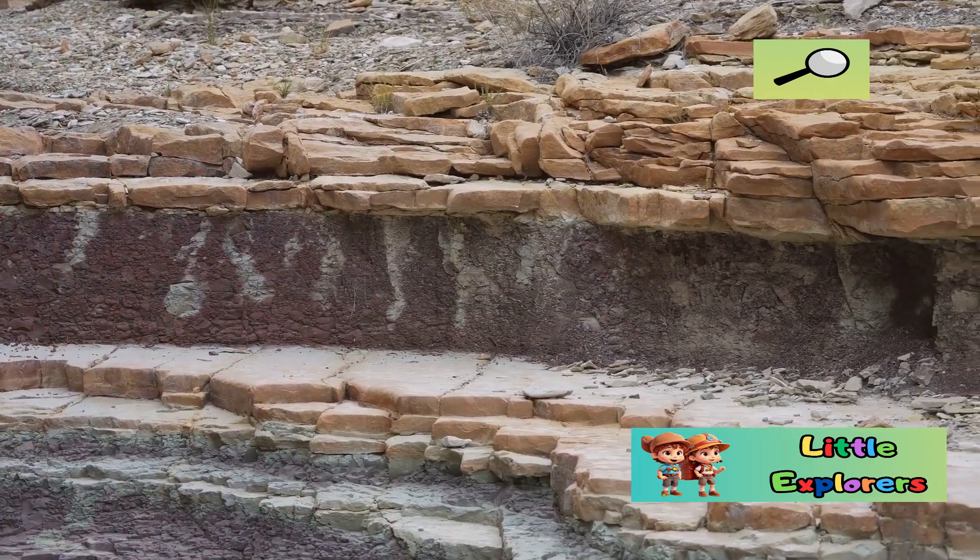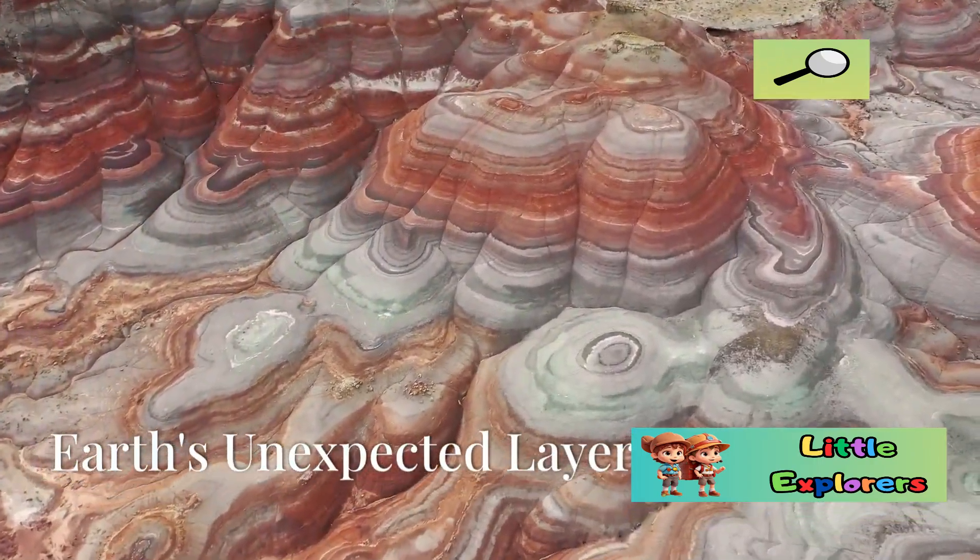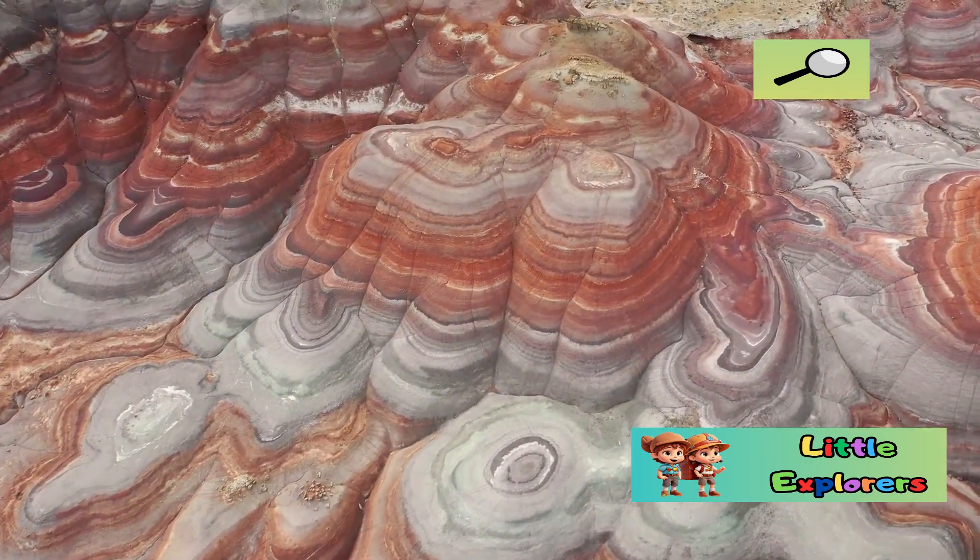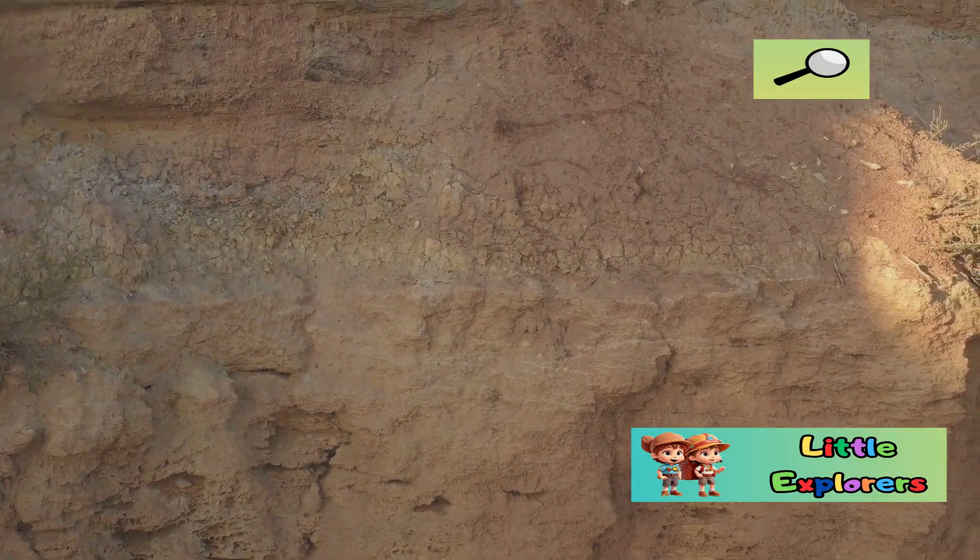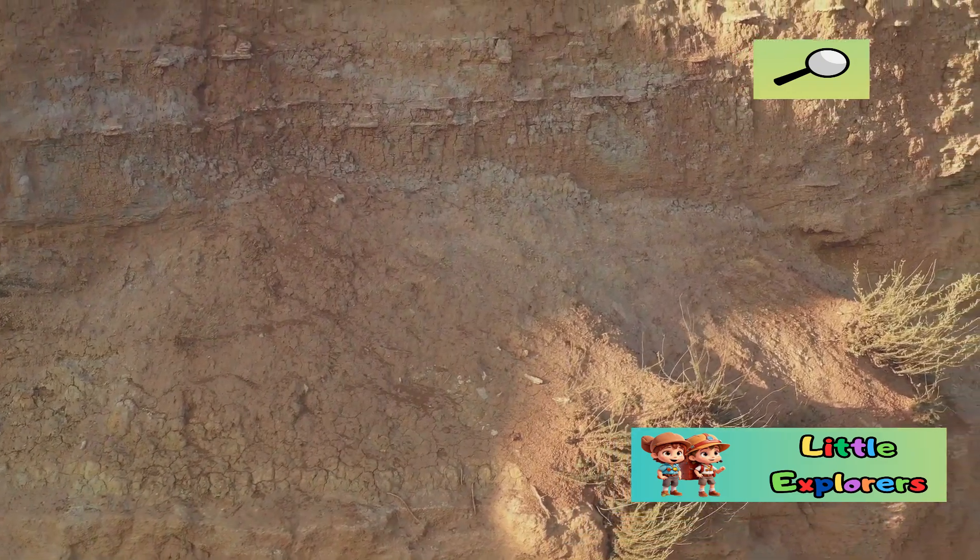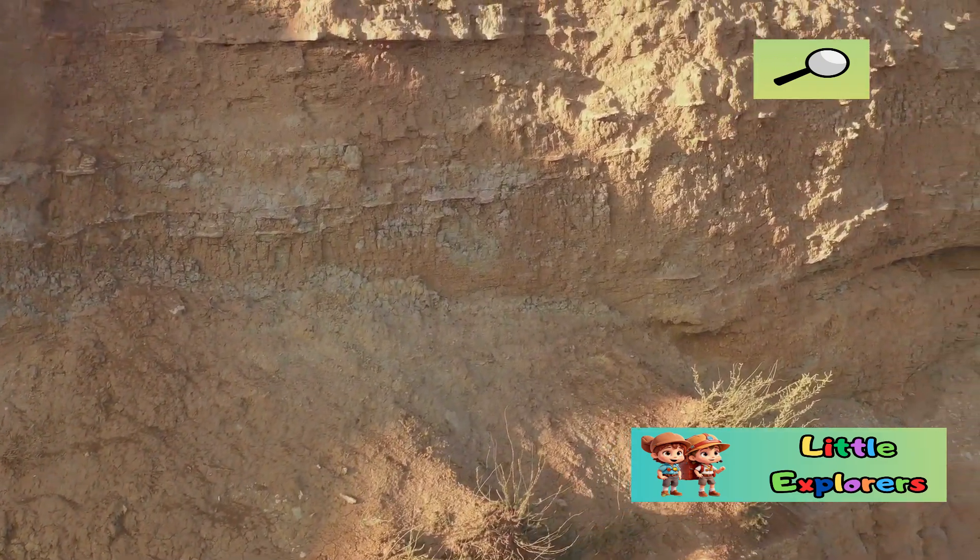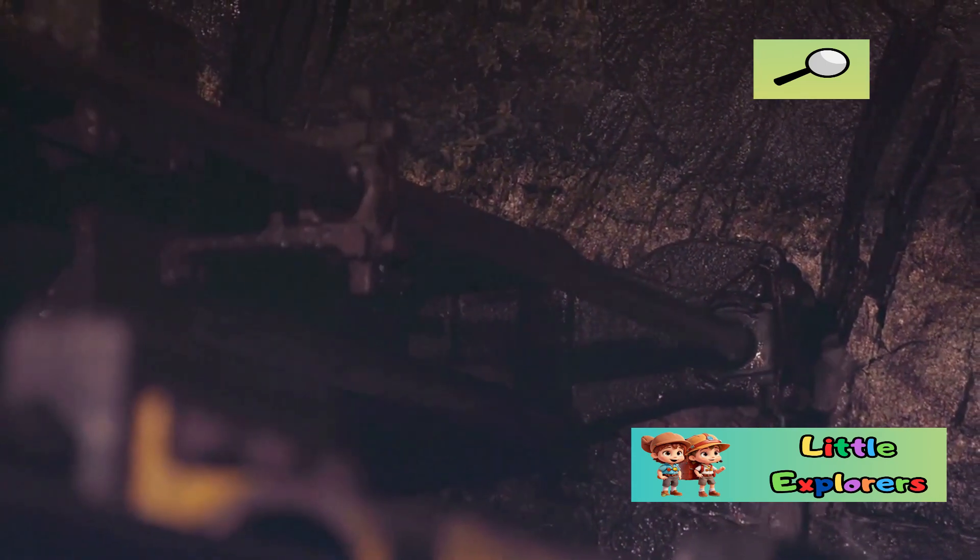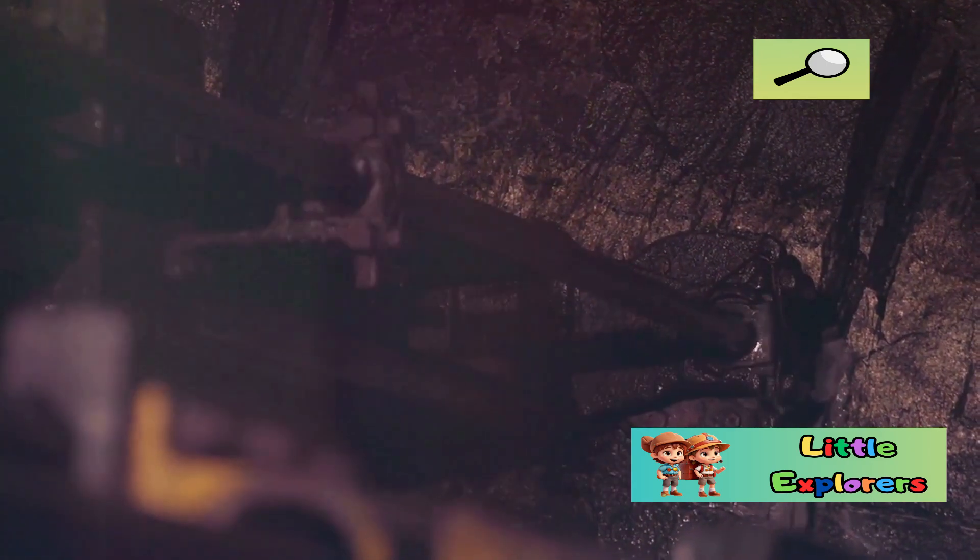The Earth, a dynamic and complex planet, holds many secrets beneath its surface. One of the most intriguing revelations comes from the study of its unexpected layers. One of the most significant discoveries from the Kola Super Deep Borehole was the unexpected composition of the Earth's crust. This ambitious project revealed surprising findings that challenged long-held geological theories.